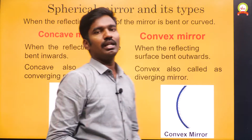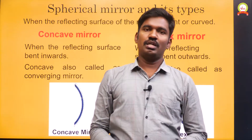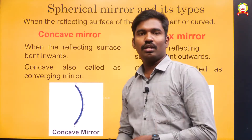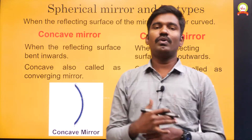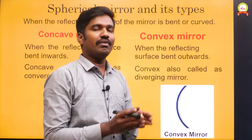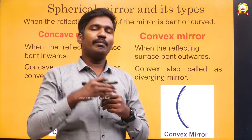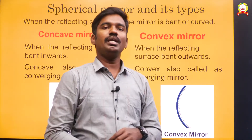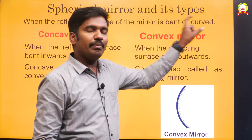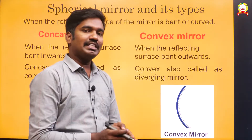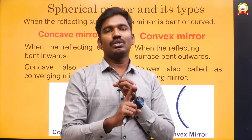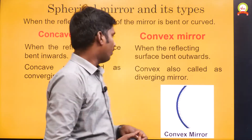Next, let's talk about spherical mirrors. What is the meaning of the word spherical? The surface is in the form of a curve. A spherical mirror is one where the reflecting surface is either bent inwards or bent outwards. Those kinds of mirrors are called spherical mirrors. Spherical mirrors are of two types: one is concave and another is convex.